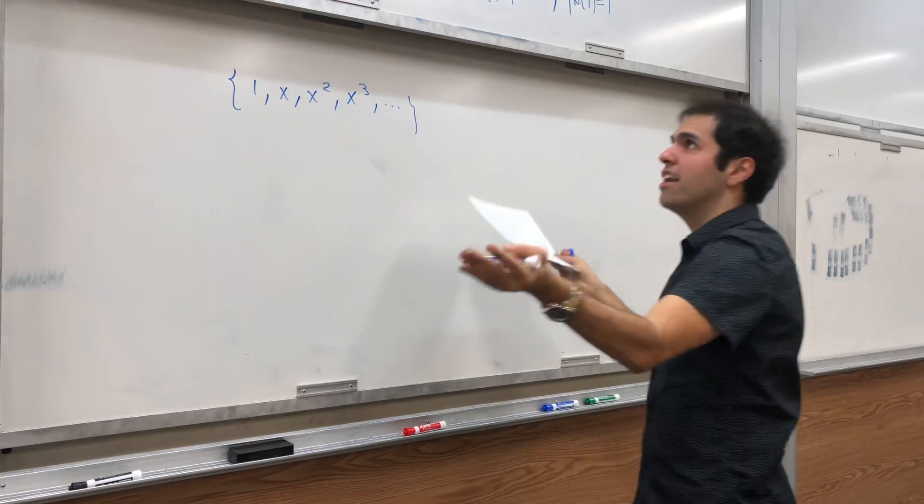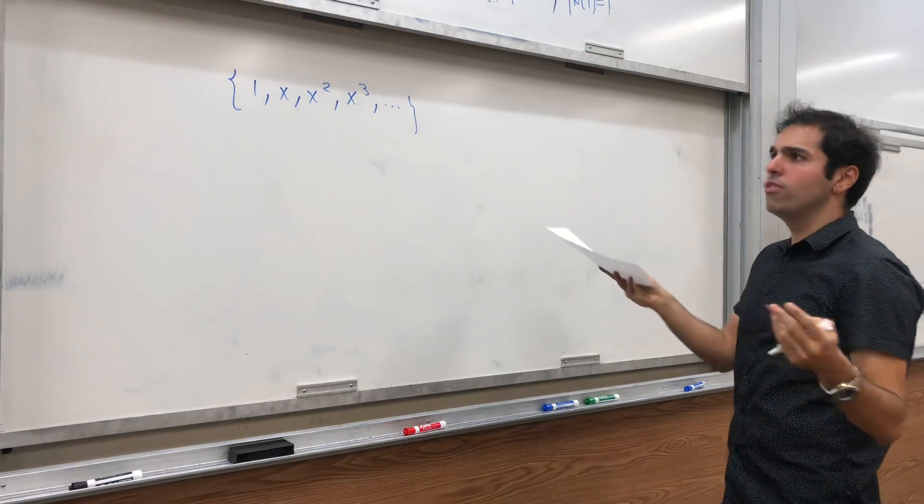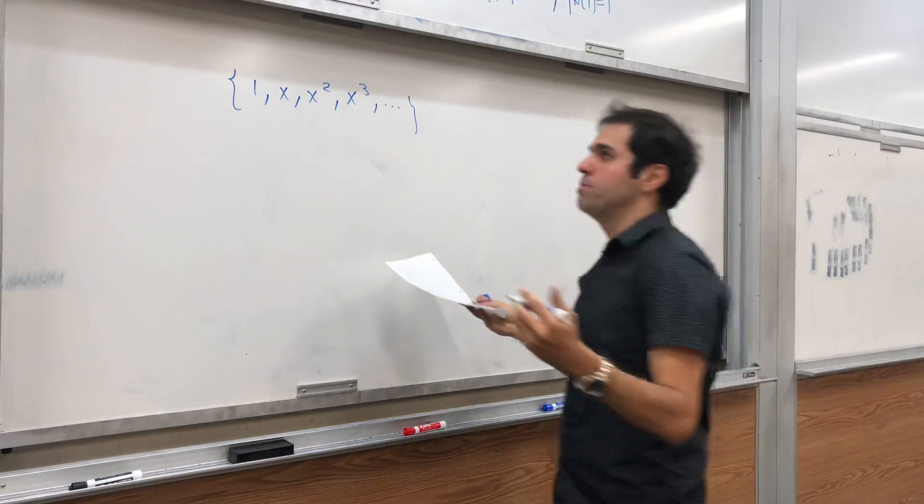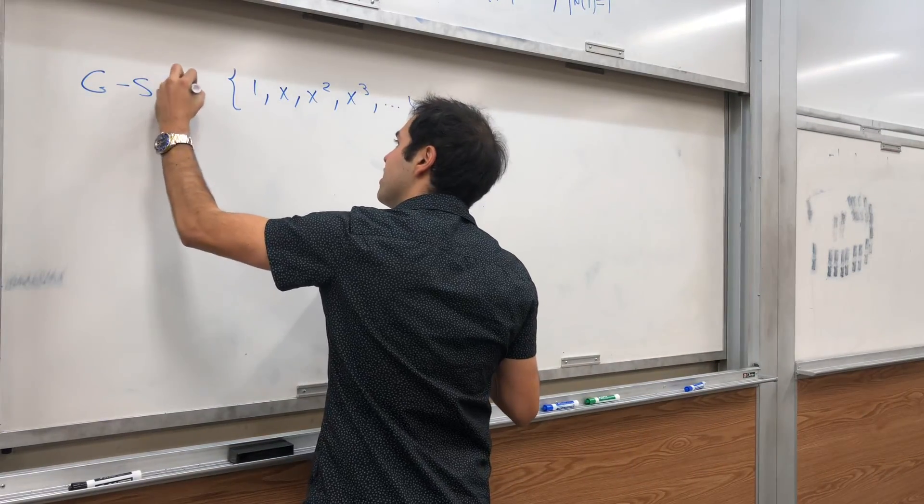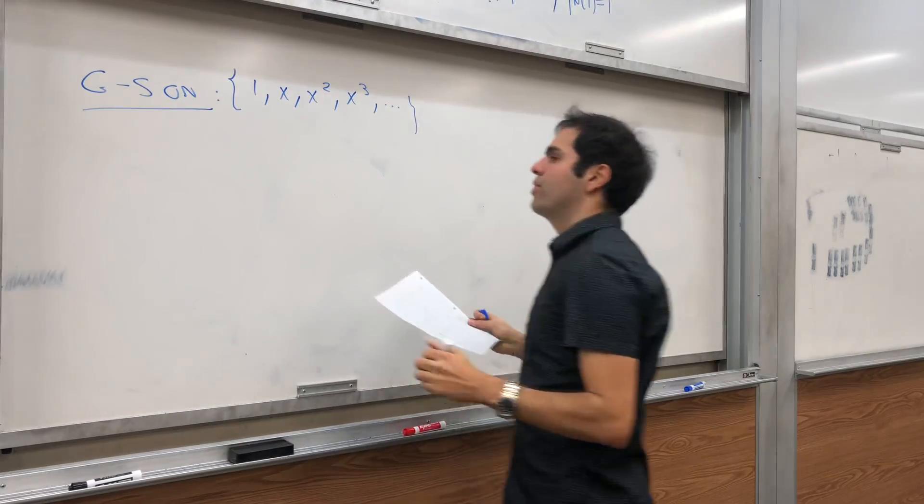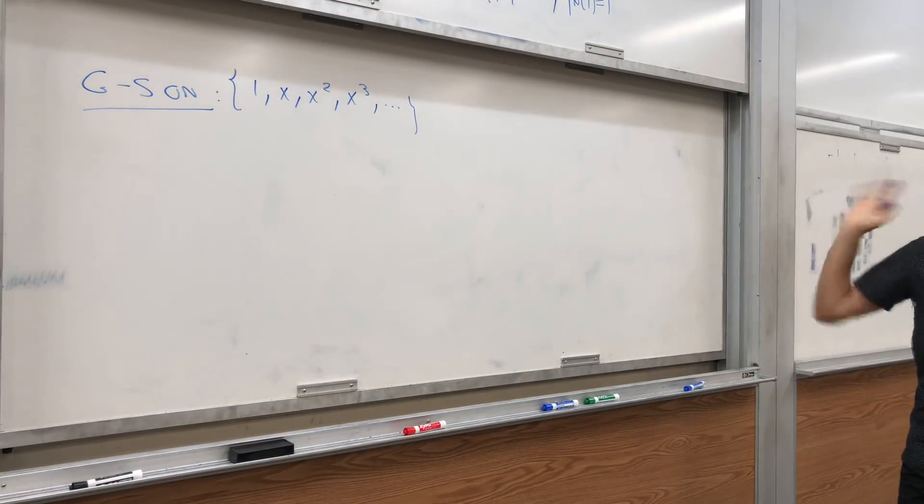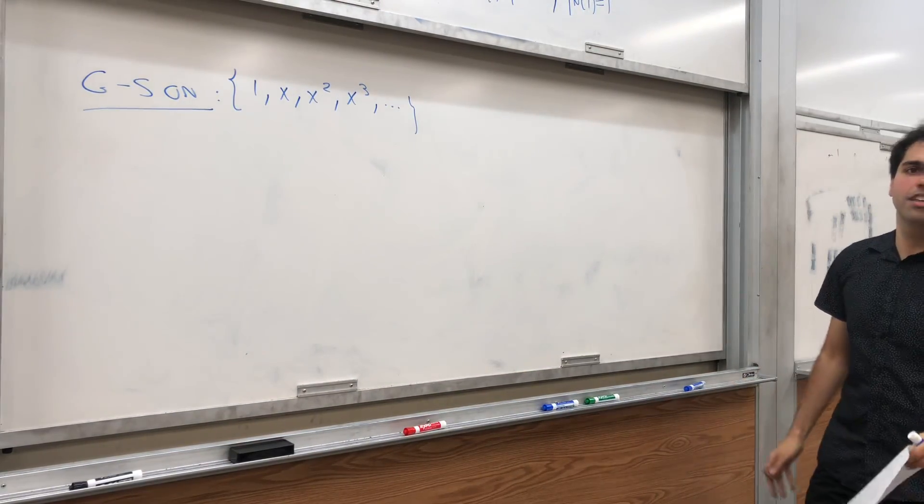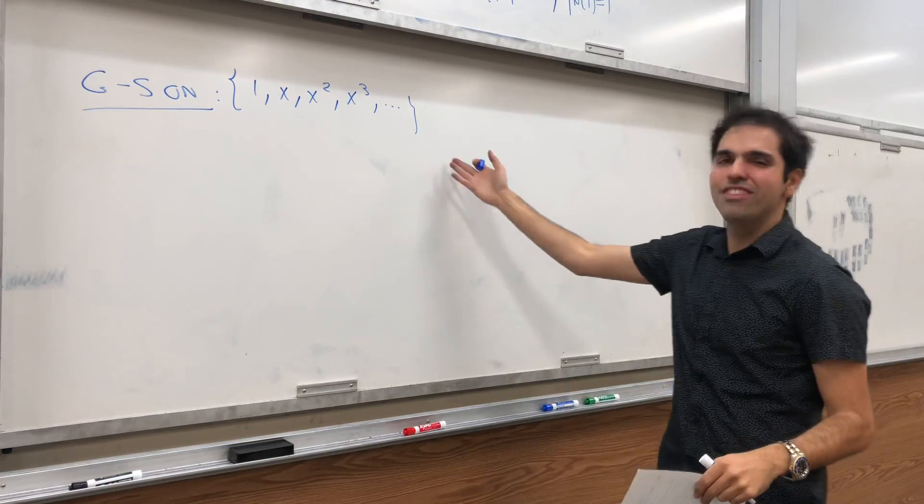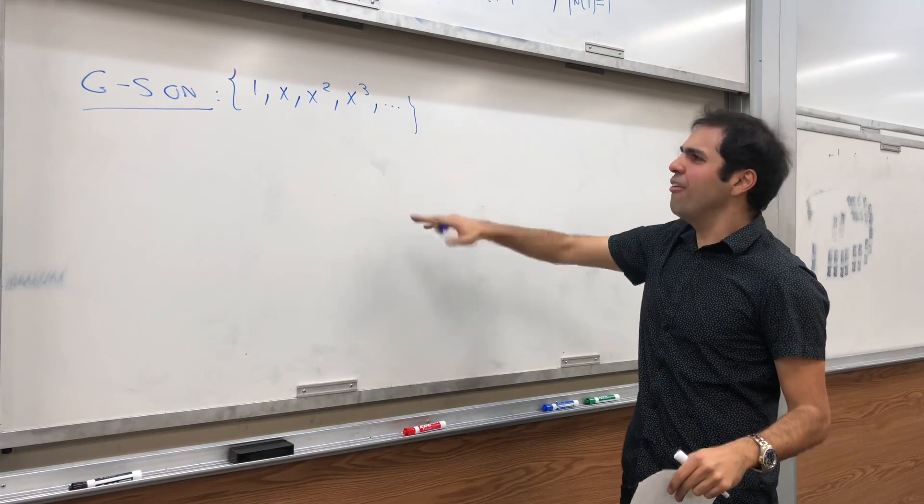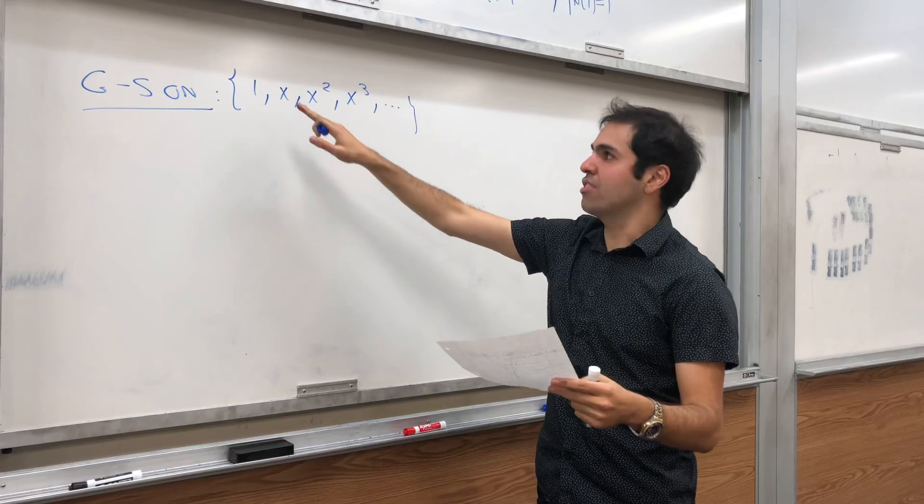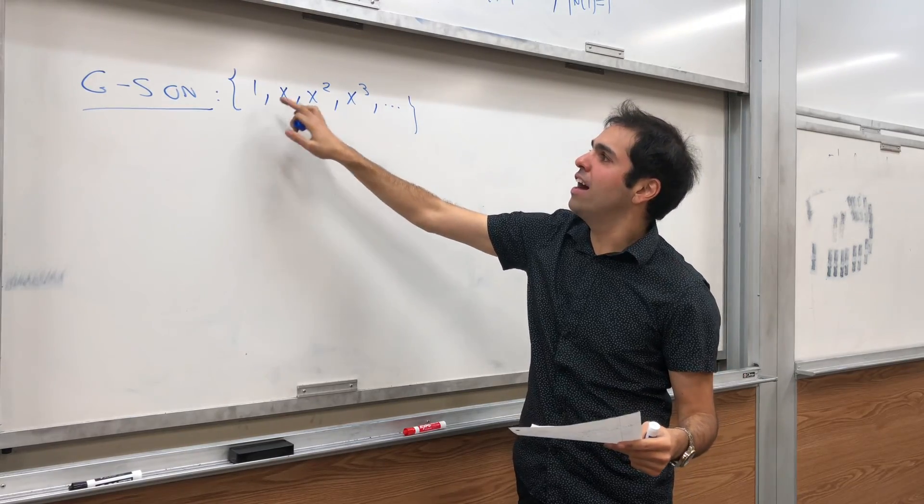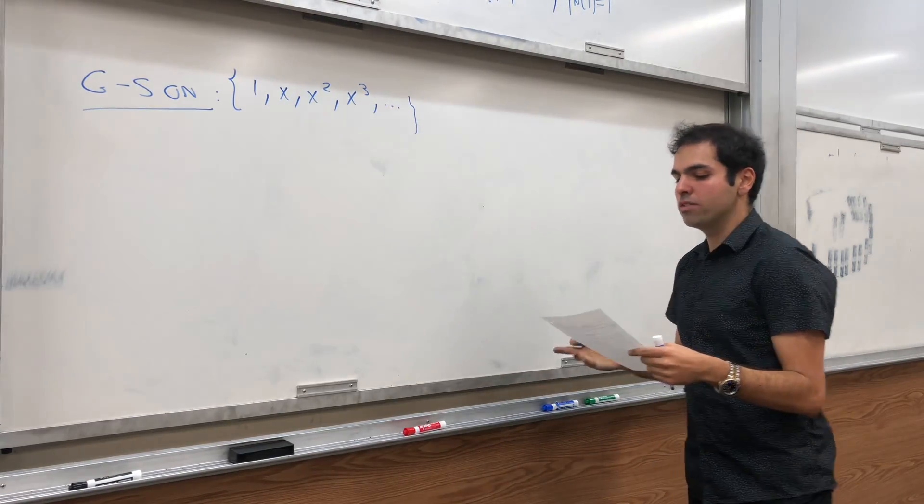Here, what we would like to do is take this basis, the standard basis of V, and we would just like to apply the Gram-Schmidt process on this. And I will not do the general case, because that would take like hours, maybe infinite time. But I will just show it to you for the first three ones, the first three Legendre polynomials.